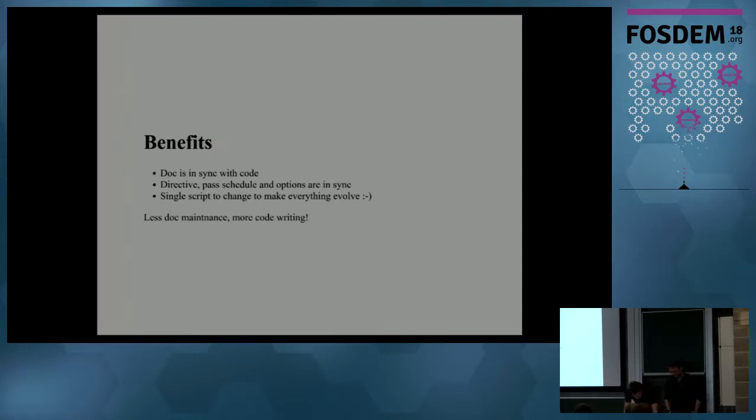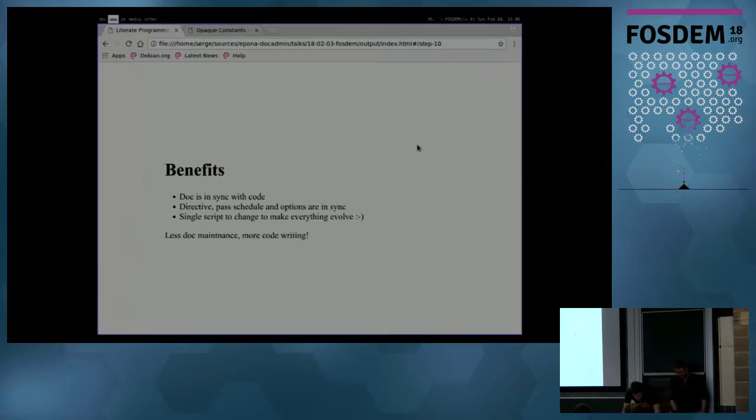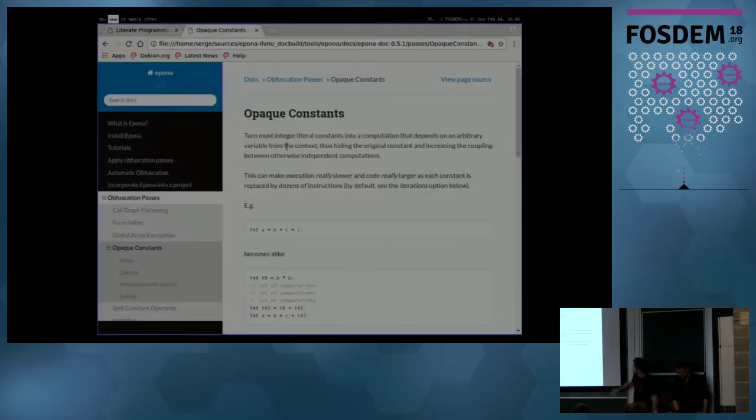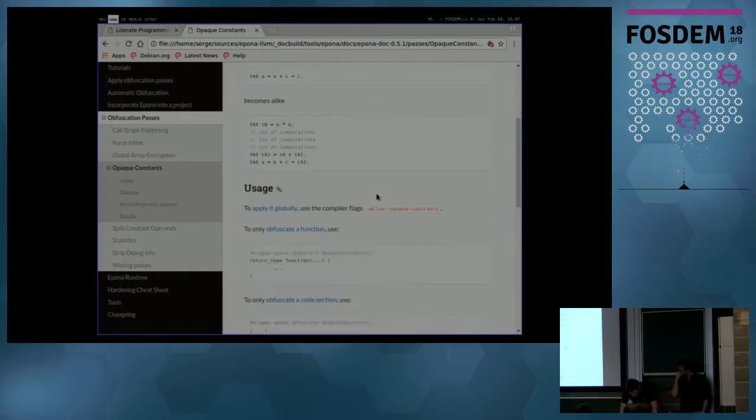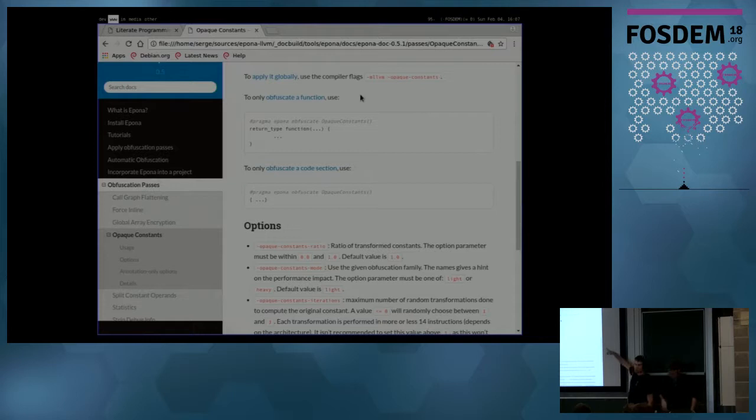And just to show, this is the kind of documentation we generate. So although it's generated documentation, there's actual interesting stuff here. Code examples that explain how it behaves. And all this stuff here are automatically generated from the description. And it turns out that even us, we sometimes go to the documentation, copy that and paste it because that's what we want to do. And that's how documentation is often used.